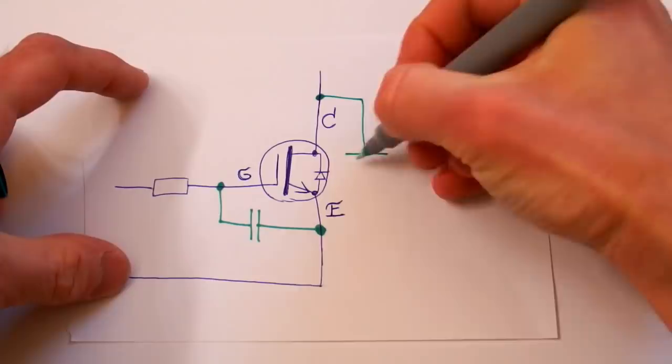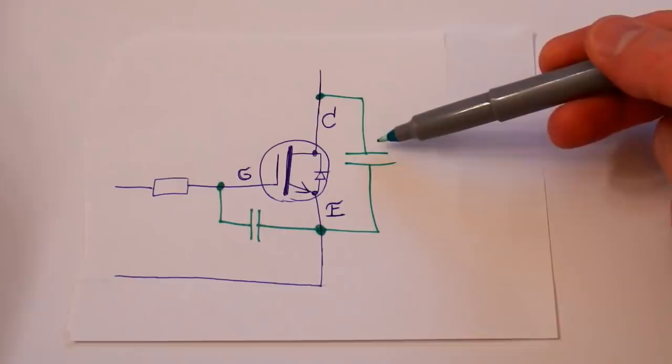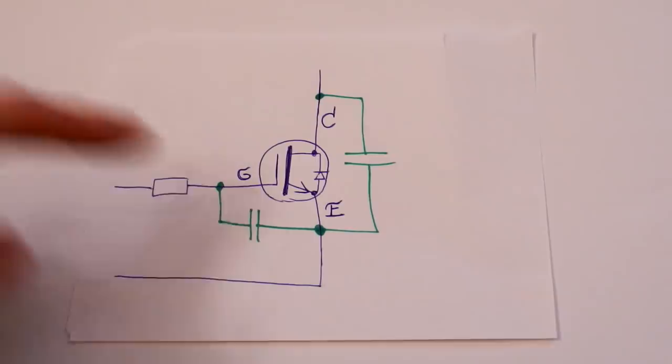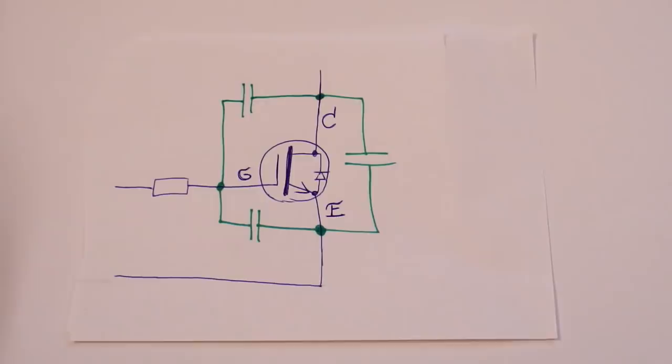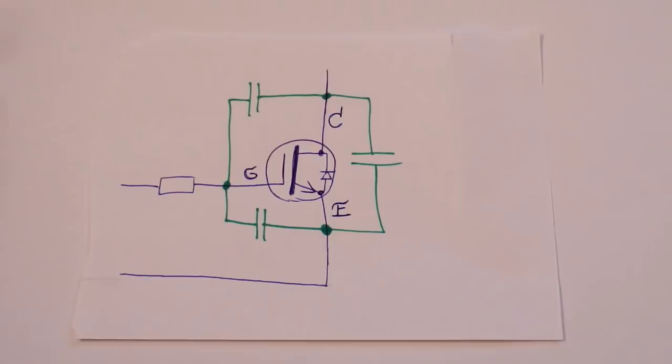It's simple so far, but it's going to get more complicated. The transistor also has other internal capacitances — one from collector to emitter, called the output capacitance, and one called the gate capacitance or input capacitance. And there is also the so-called reverse transfer or Miller capacitance, which is the capacitance from the collector to the gate.